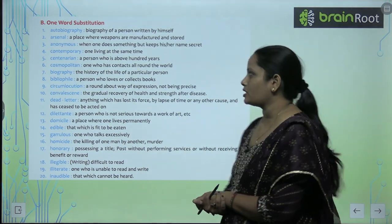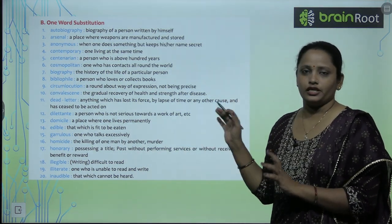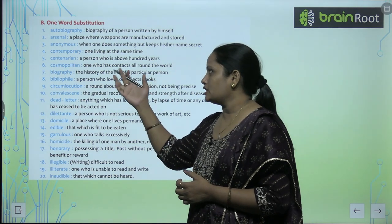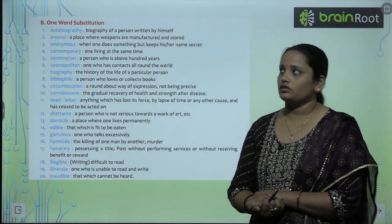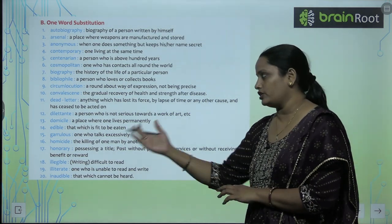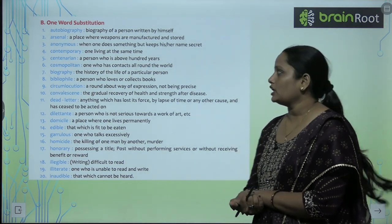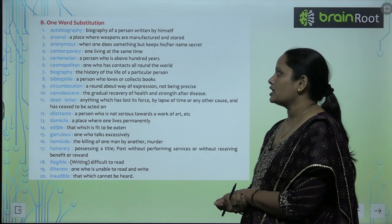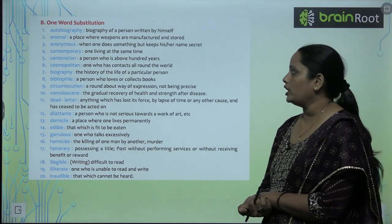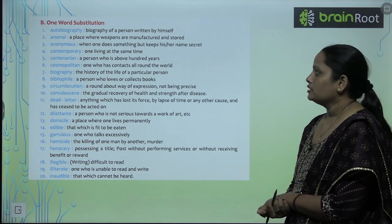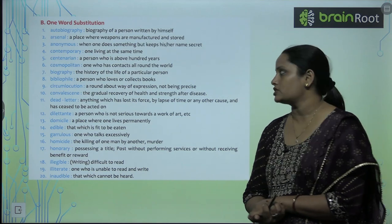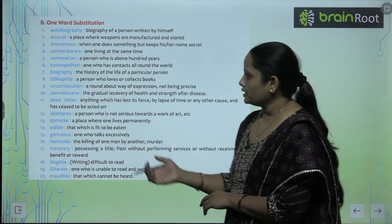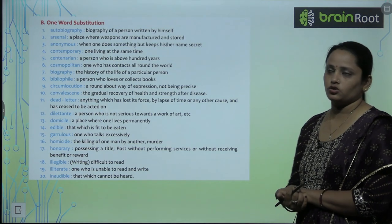The next topic is one word substitution. Autobiography means biography of a person written by himself. Arsenal is a place where weapons are manufactured and stored. Anonymous means one who does something but keeps his or her name secret. Contemporary means one living at the same time. Centennial means a person who is above 100 years. Cosmopolitan means one who has contact all around the world. Read these words and their meanings and learn them.